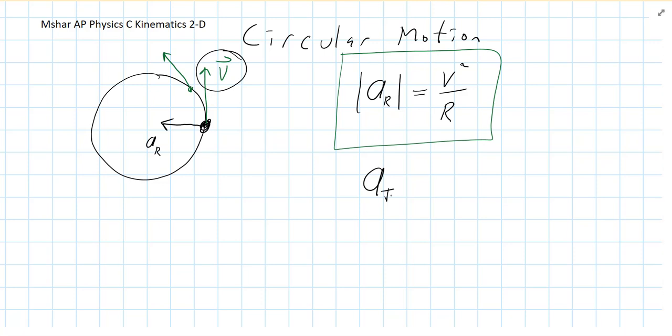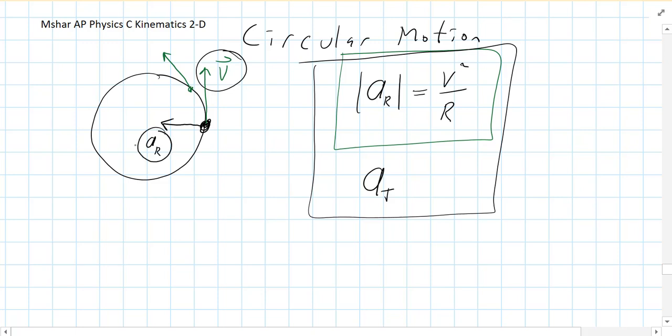There's no equation for that. It's just, that's kind of like what the acceleration that you would normally think of is. So there's two components of acceleration when you're going in a circle. You have a radial acceleration, but you may also be speeding up or slowing down. So you could also have a tangential acceleration.